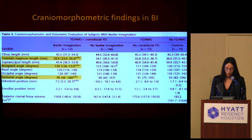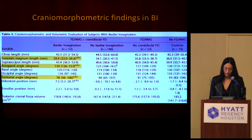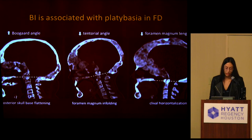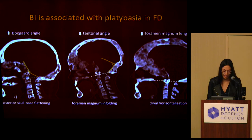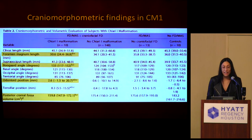Cranio-morphometric findings in subjects with basilar invagination were compared to subjects with craniofacial FD without basilar invagination, subjects with no craniofacial involvement, and normal controls. Measures highlighted in yellow showed significant differences among all groups. Patients with basilar invagination had decreased foramen magnum length, an increase in Bougard's angle, and a decrease in tentorial angle. Together, these findings support that basilar invagination in this population is associated with skull base flattening. The increase in Bougard's angle is a measure of posterior skull base flattening. The decrease in tentorial angle is likely due to infolding of the margins of the foramen magnum — a phenomenon commonly reported in osteogenesis imperfecta, thought to be due to micro-fractures in the skull base. The decrease in foramen magnum length is possibly due to horizontalization of the clivus.